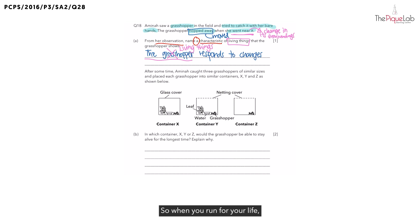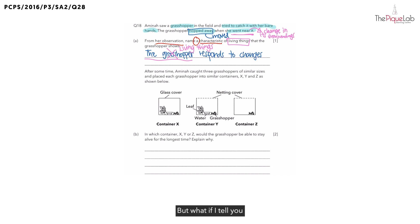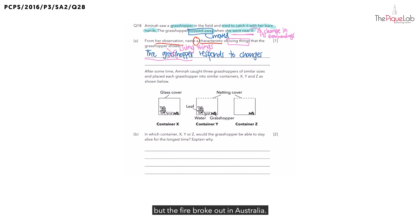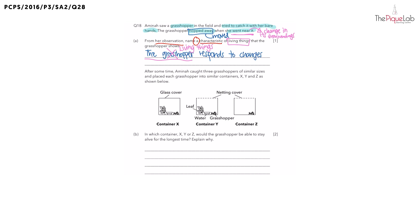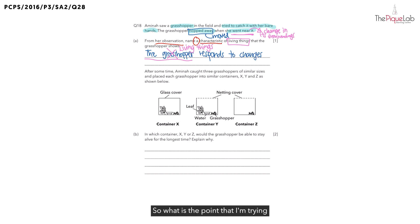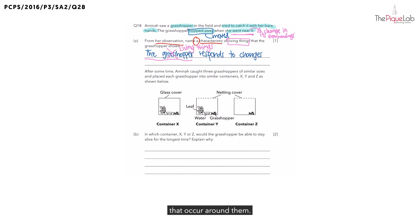Would you run for your life? Yes you would. So when you run for your life, you are basically responding to that fire that happened around you, which is in your house. But what if I tell you that you are comfortably lying at home on your sofa, but the fire broke out in Australia? Would you need to run for your life in this case? You wouldn't need to, right? This is because the fire is not around you. If the fire is not around you, do you need to respond to that fire? You don't. The point I'm trying to bring across is that living things only respond to changes that occur around them.